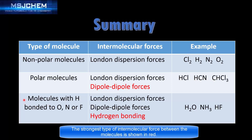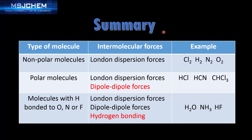Finally, molecules with hydrogen bonded to oxygen, nitrogen, or fluorine have London dispersion forces, dipole-dipole forces, and hydrogen bonding. The examples we've looked at are H2O, NH3, and HF. That's all from this video — don't forget to check the video description for a link to a practice worksheet.